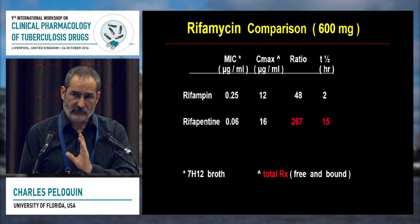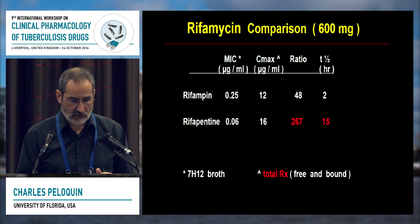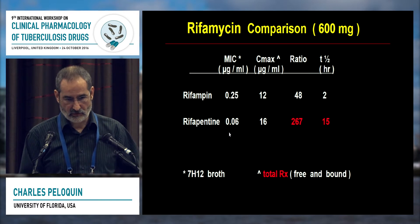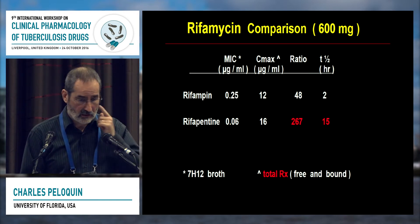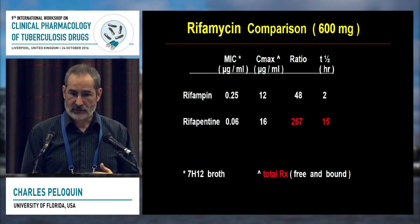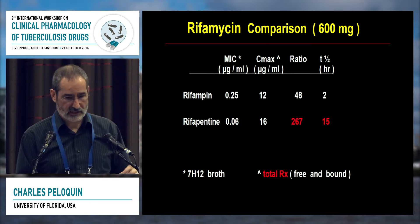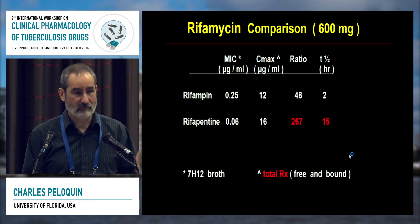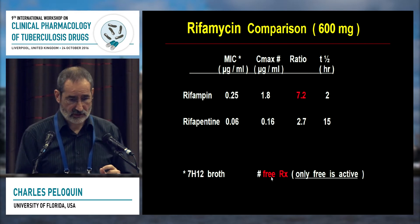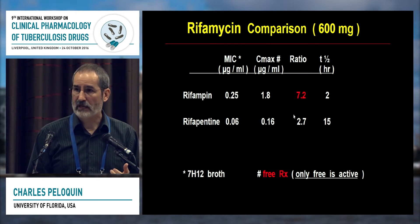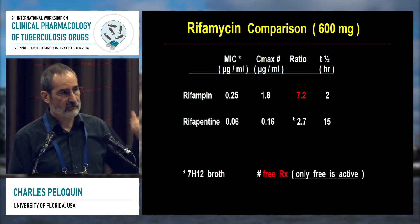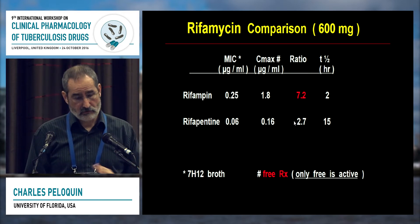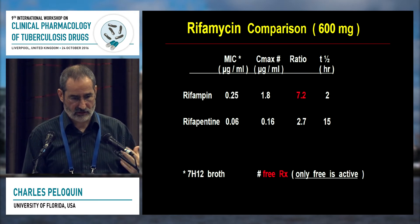If we look at the parameters, focusing on C-Max, this is where the two differentiate. If you look at total drug concentrations, rifapentine seems to be the winner — its MIC is anywhere between half down to a quarter of that of rifampin, it has a somewhat higher C-Max, and the C-Max to MIC ratio is much in favor of rifapentine. It also has a longer half-life. But if you look at free drug concentrations, this is the one place where rifampin may have the advantage. The free drug concentration is actually the gradient which drives drugs into the lesions where the organisms are hiding.